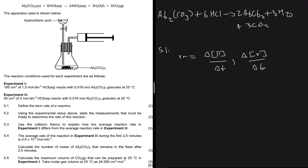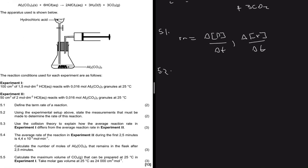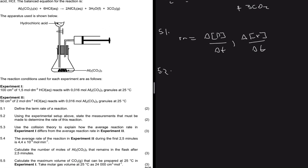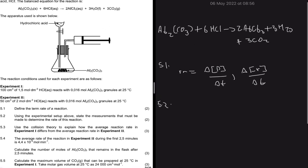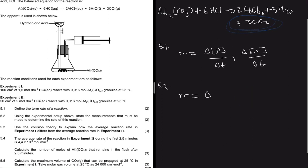Question 5.2 says: using the experimental setup above, state the measurements that must be made to determine the rate of this reaction. Looking at the setup, one of the products is a gas. To calculate the rate of reaction, we need the change in concentration of the products or reactants divided by unit time, so one measurement needed is delta T, which is measured manually using a stopwatch.